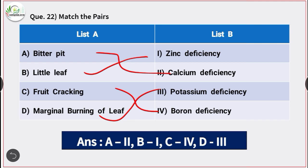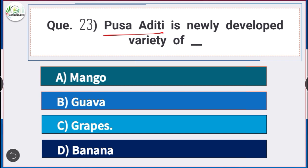Question number 23: Pusa Urvashi is a newly developed variety of — answer option C — grapes. Pusa Urvashi is a newly developed variety of grapes.